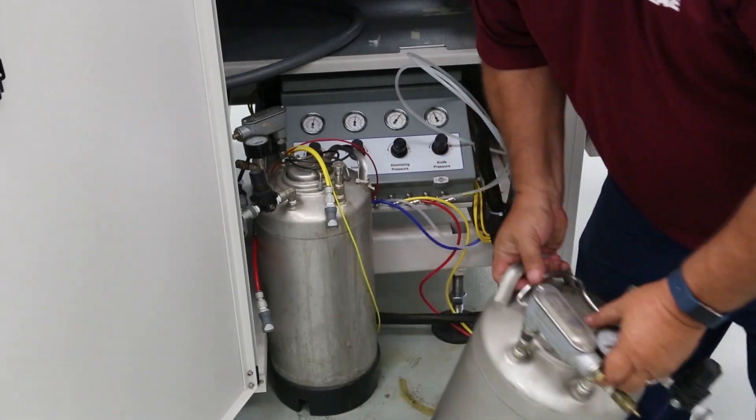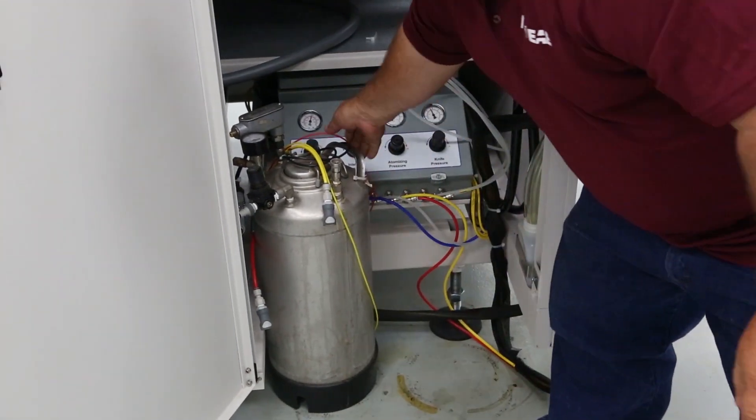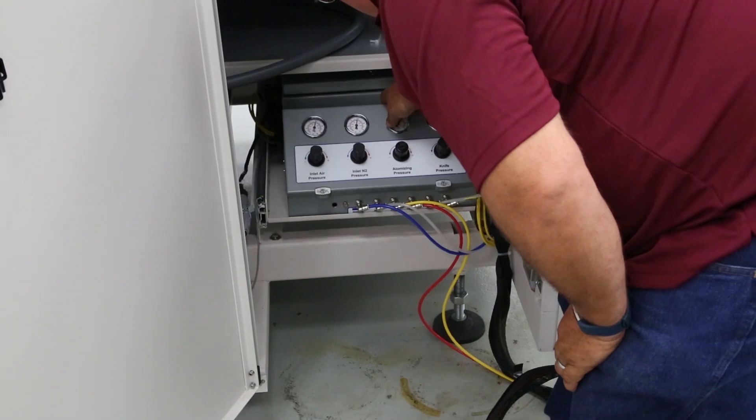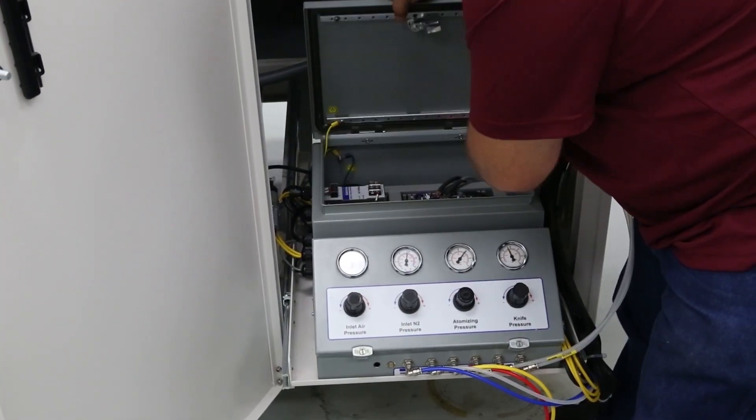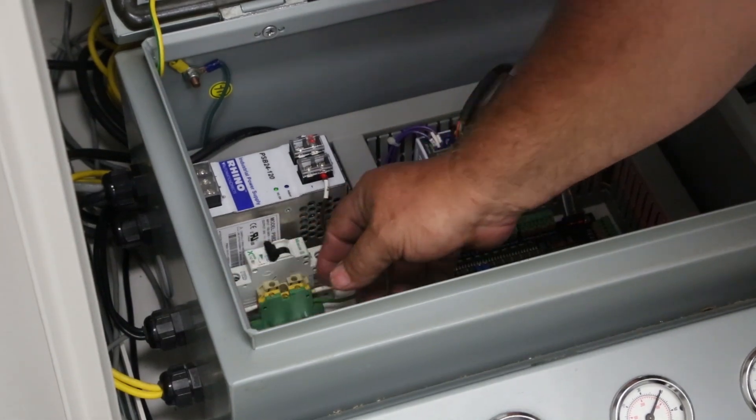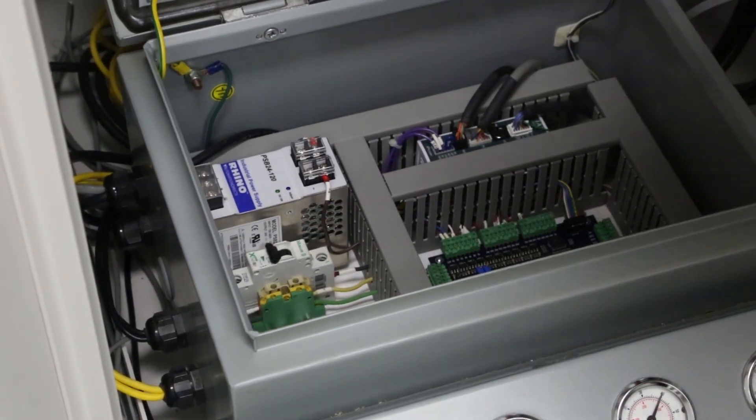Move the tanks out of the way to access the power control box. Pull the control box out and open the top access panel. Then turn off the circuit breaker and slide the box back in.